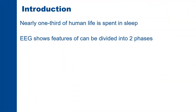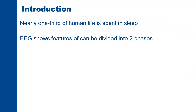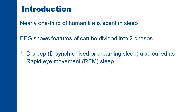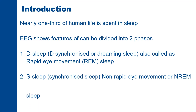Nearly one-third of human life is spent in sleep. The electroencephalogram shows features that can be divided into two phases: the desynchronized or dreaming sleep, also called rapid eye movement sleep, and the synchronized sleep, known as non-rapid eye movement or NREM sleep.